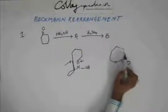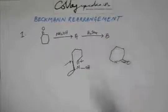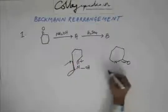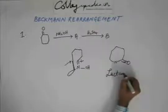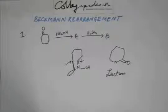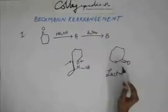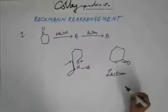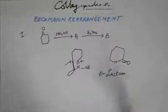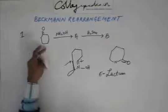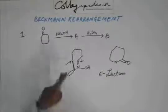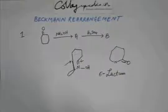This is a 7-member ring — 1, 2, 3, 4, 5, 6, 7 — and C double bond O is on the carbon directly attached to this nitrogen. This is a lactam. These kinds of cyclic amides are called lactam. Depending upon the number of carbons in the ring: 3-member is alpha-lactam, 4 is beta-lactam, 5 is gamma-lactam, 6 is delta-lactam, and 7 is eta-lactam. So this is a 7-member ring and is called eta-lactam. If you have a cyclic ketone with a 6-member or 5-member ring, during Beckmann's rearrangement there will be ring expansion and you will end up with a cyclic amide called lactam.